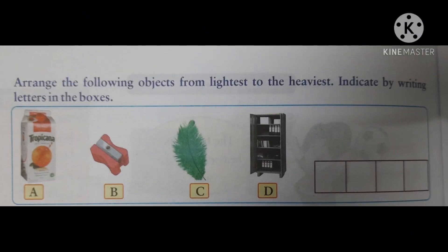See the next one. Arrange the following objects from lightest to the heaviest. Indicate by writing letters in the boxes. Which one is the lightest? You have to start from first.